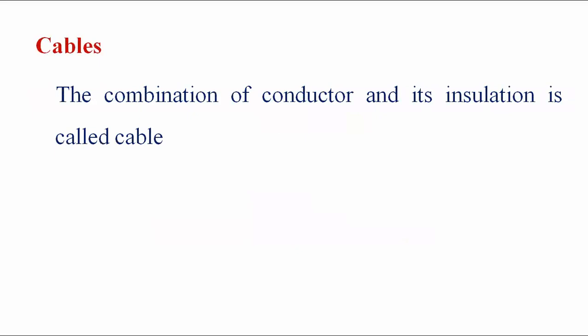A cable is the combination of a conductor and its insulation. The materials used are aluminum and copper. For transmission and distribution lines, aluminum material is preferred. For household and industrial applications, copper material is used, though copper costs more than aluminum. In aluminum, insulation problems do not arise, but copper, once exposed to moisture, alkaline, or gasoline, forms corrosion, causing insulation problems.